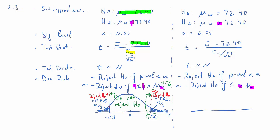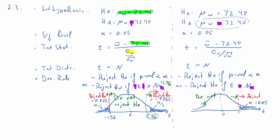For the one-tailed upper-tailed test — the lower-tailed test is just a mirror image — we're only interested in values larger than 72.4, so we reject only if our t-statistic becomes significantly large. We find the critical value that cuts off five percent, alpha, on the right. If the t-stat falls to the right of this critical value we reject; if it's smaller we do not reject. From the normal distribution, that value is 1.645, which cuts off five percent on the right-hand side.